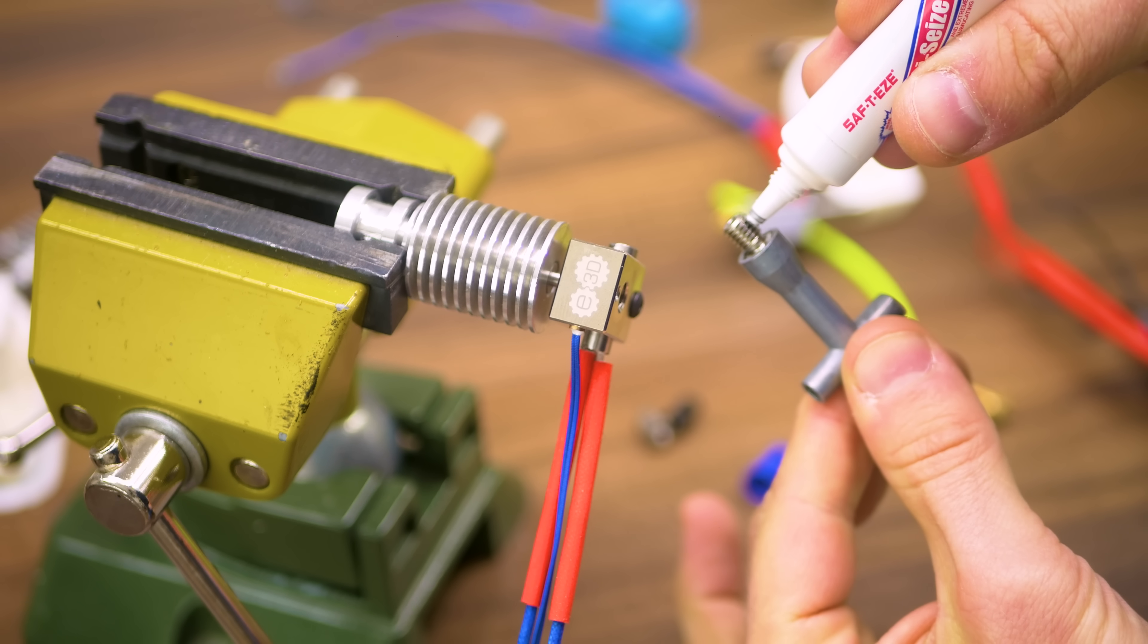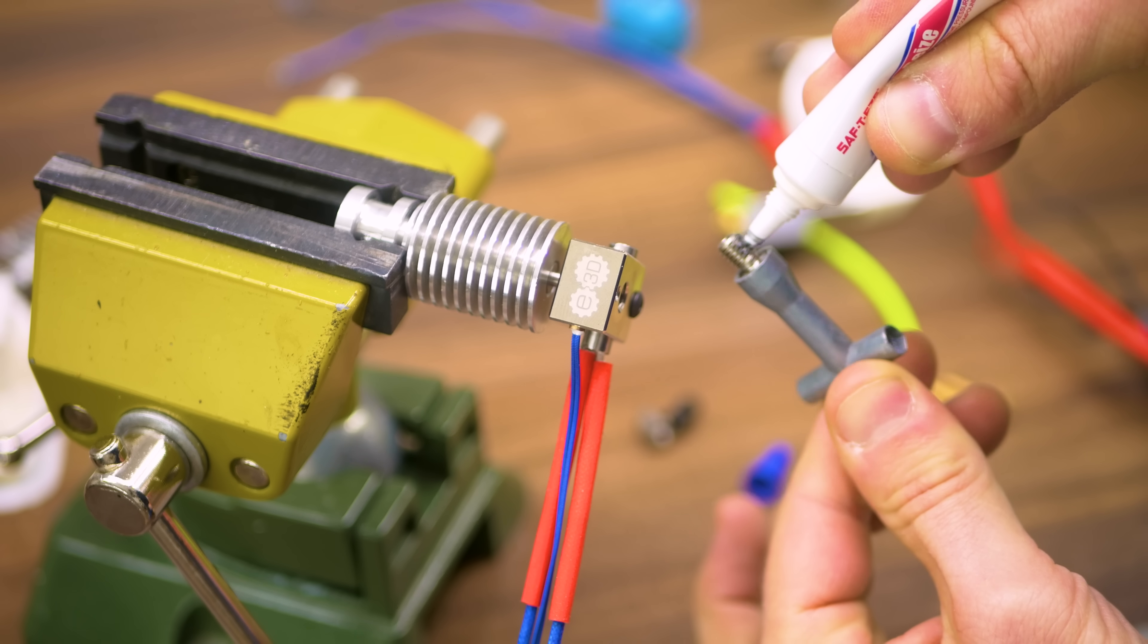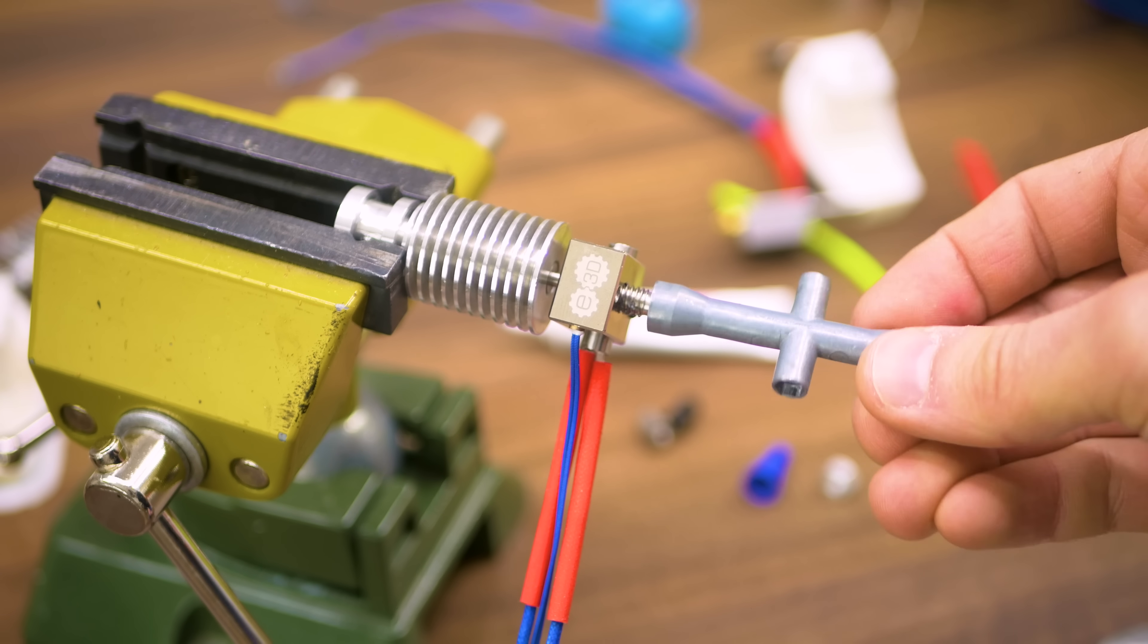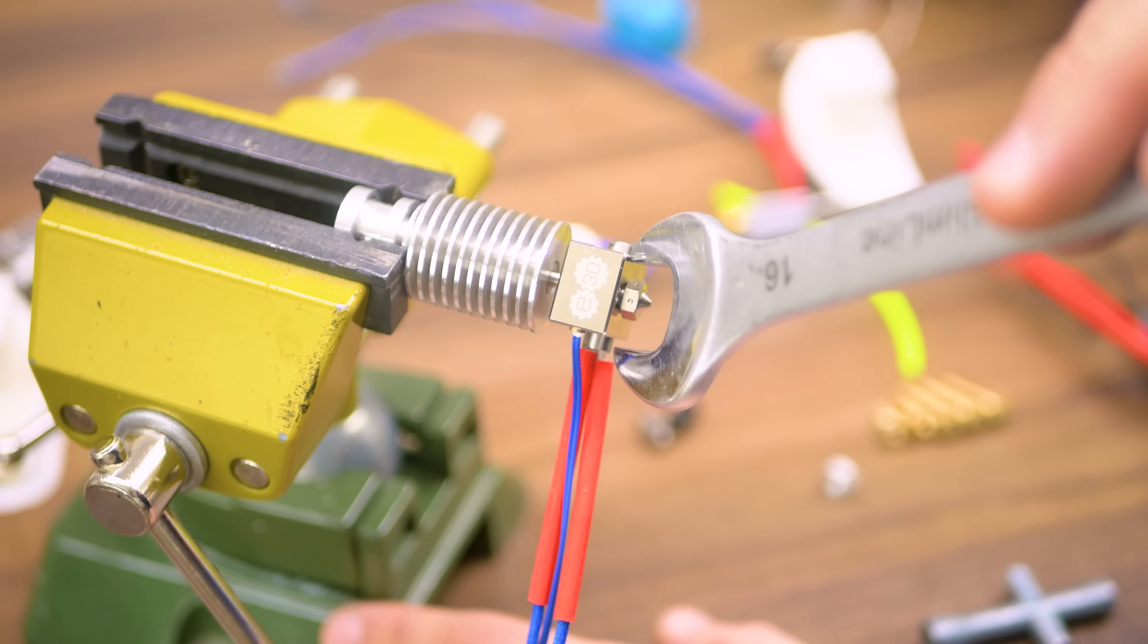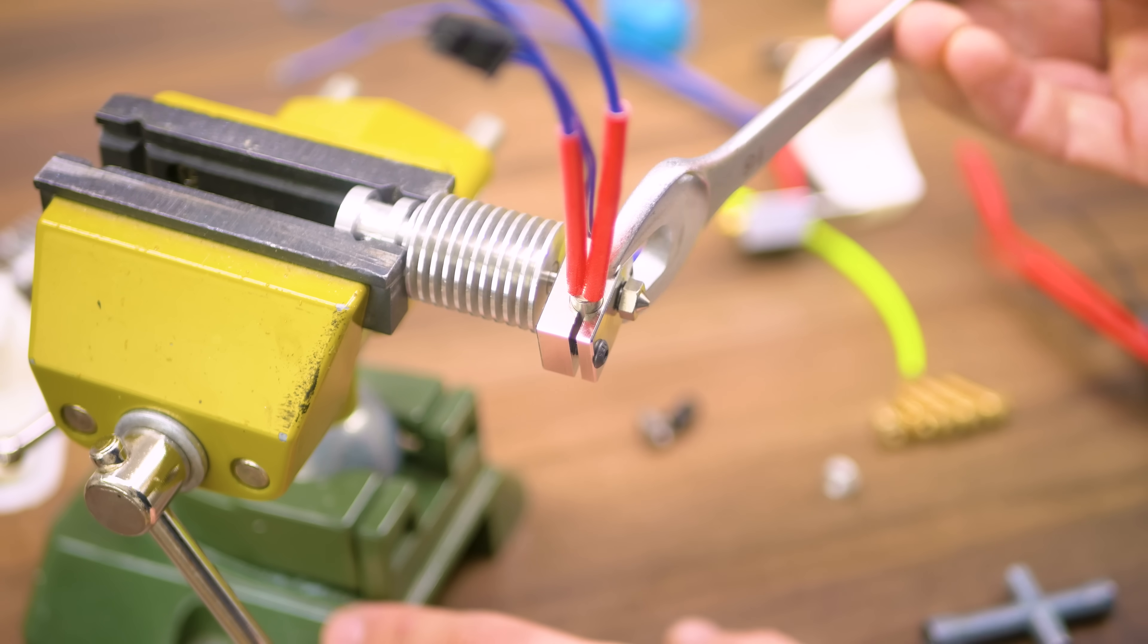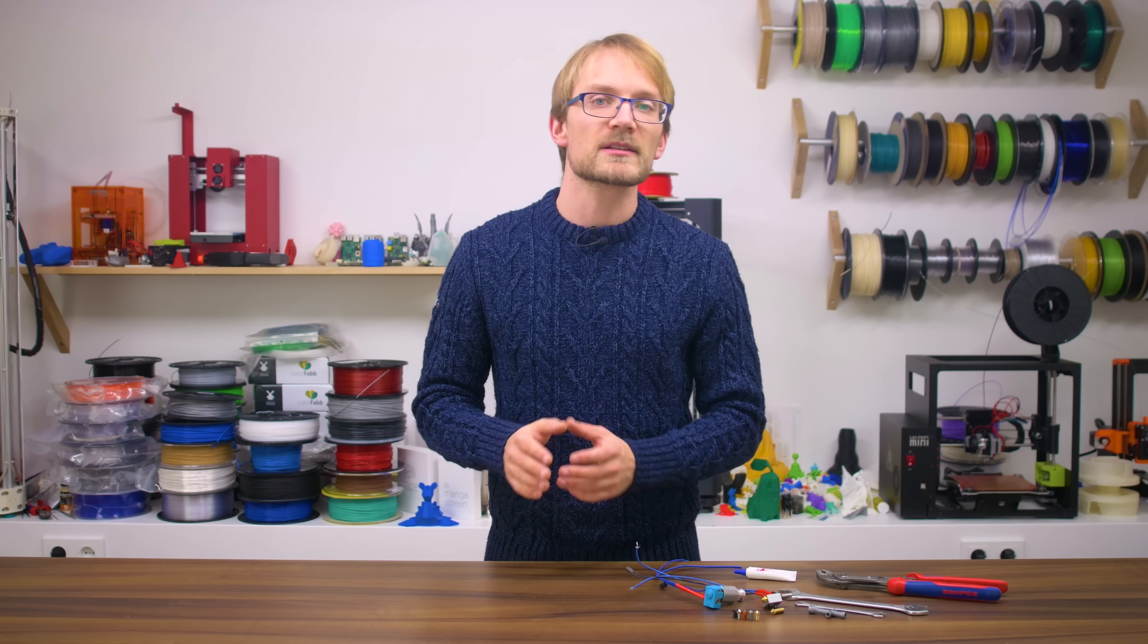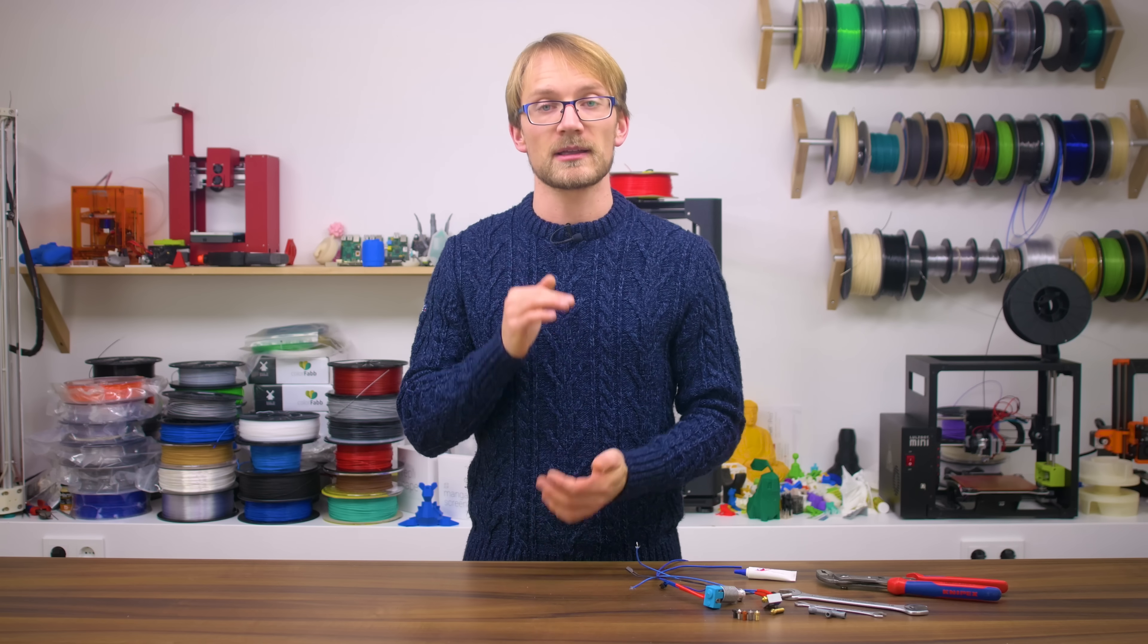For reassembly, start by applying a bit of anti-seize to the threading of your fresh nozzle. Screw in the nozzle without tightening it down, but instead make sure to leave a gap of about half a millimeter to the block. Then screw the heater block and the heatbreak back in and you should be able to feel them snugging up against the nozzle. Again, no need to make everything tight yet. Lastly, screw in the nozzle all the way and double-check that you've still got that gap between the nozzle and the block.